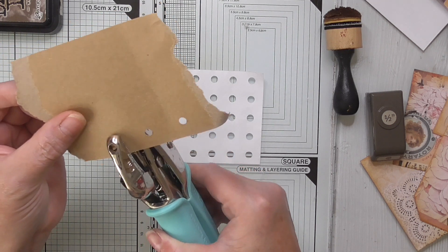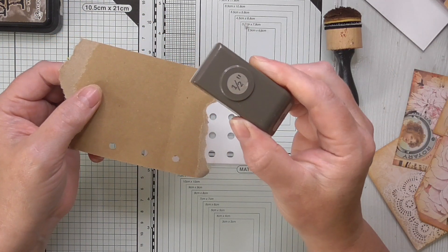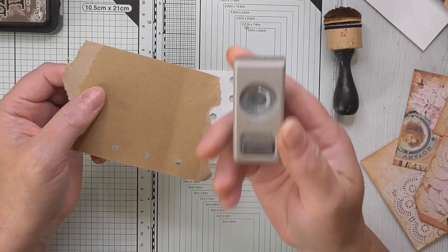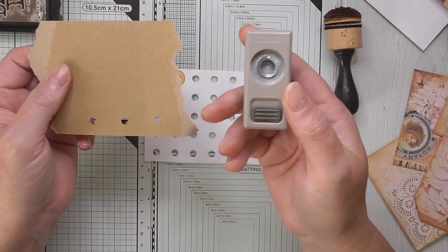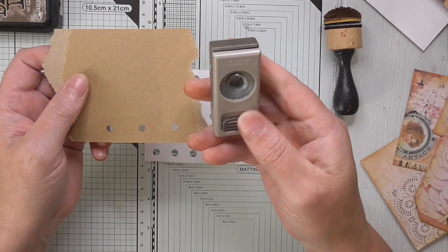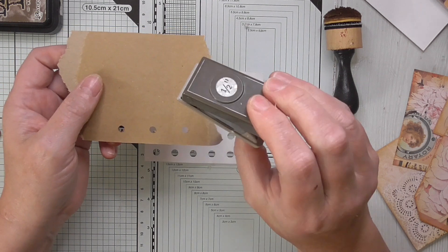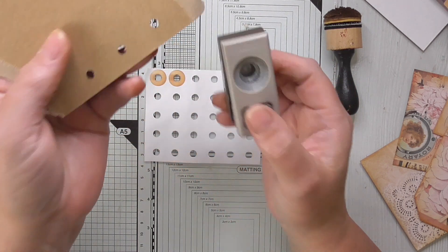And then I have a half an inch circle punch. This is a Stampin' Up one I think it's retired, but if you look on Amazon and just type in half inch circle punch, loads will come up or have a look on eBay and get one of these secondhand. The Stampin' Up ones, they're not the cheapest on the market but in my opinion they are the best, but anything will do.